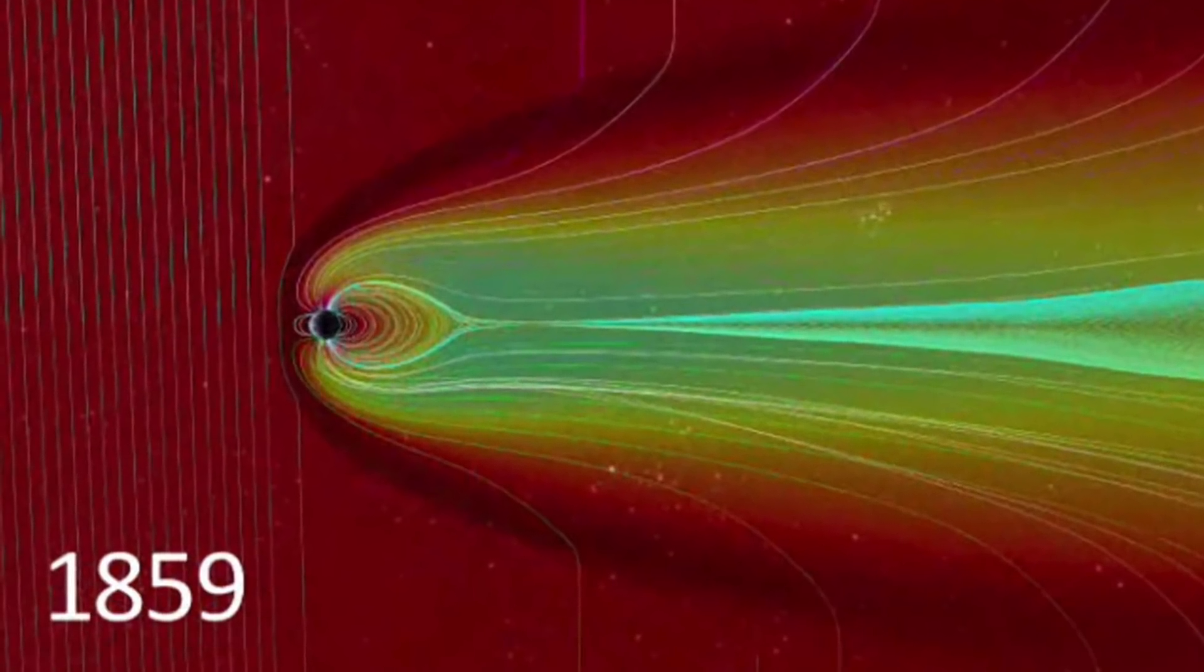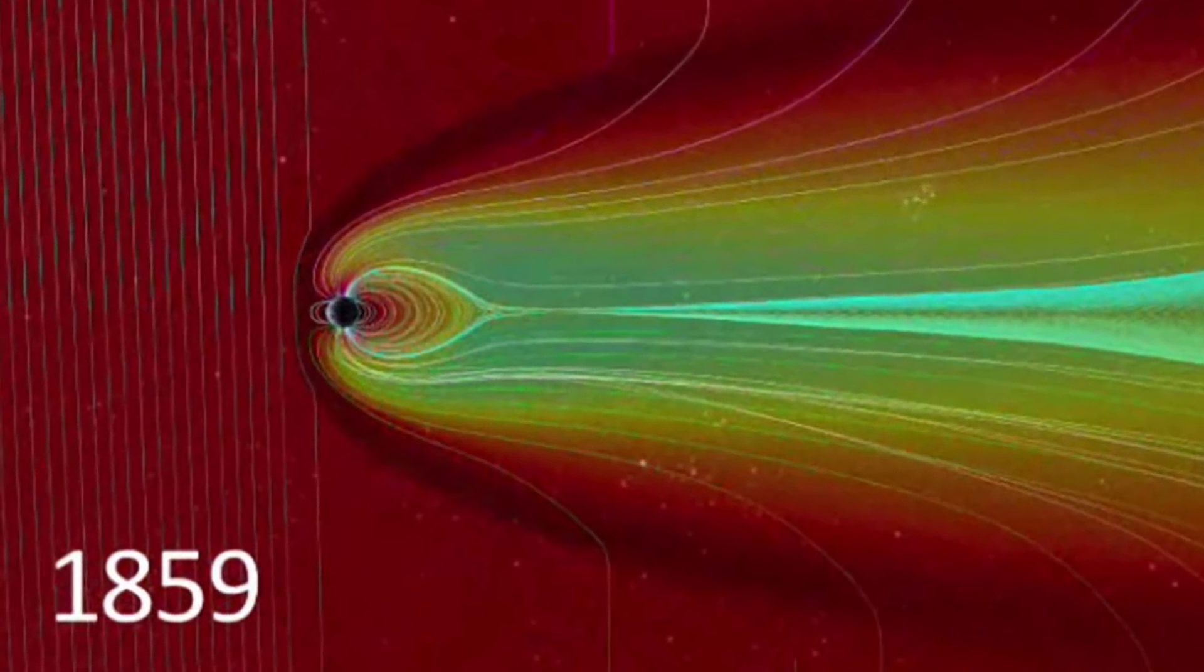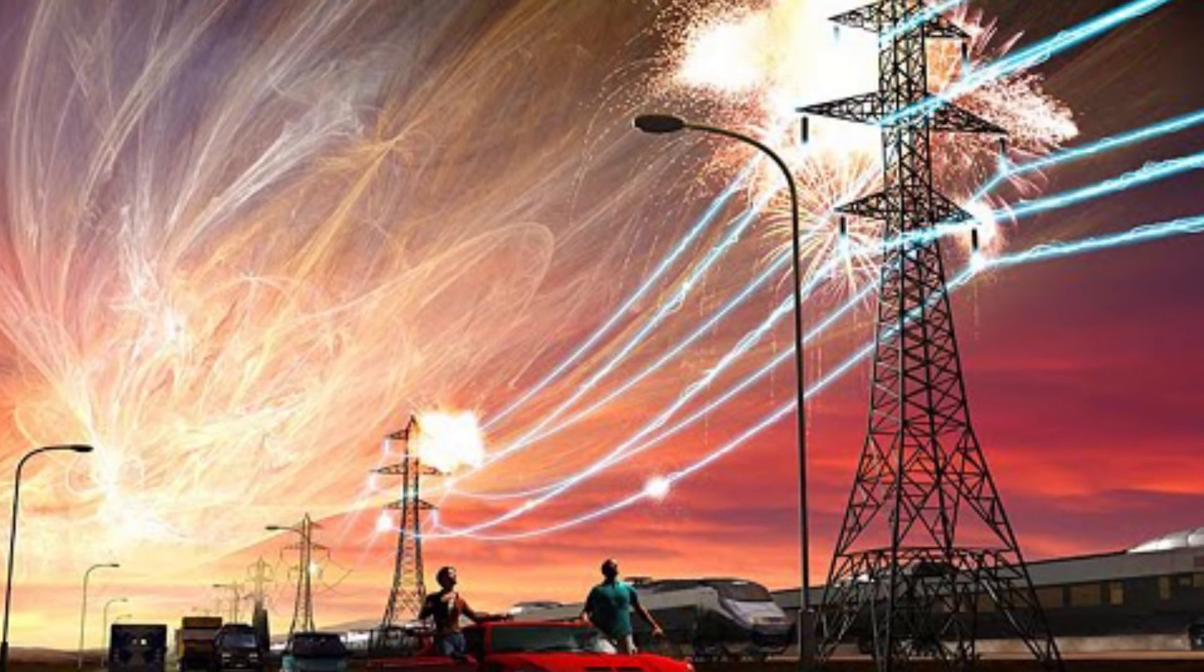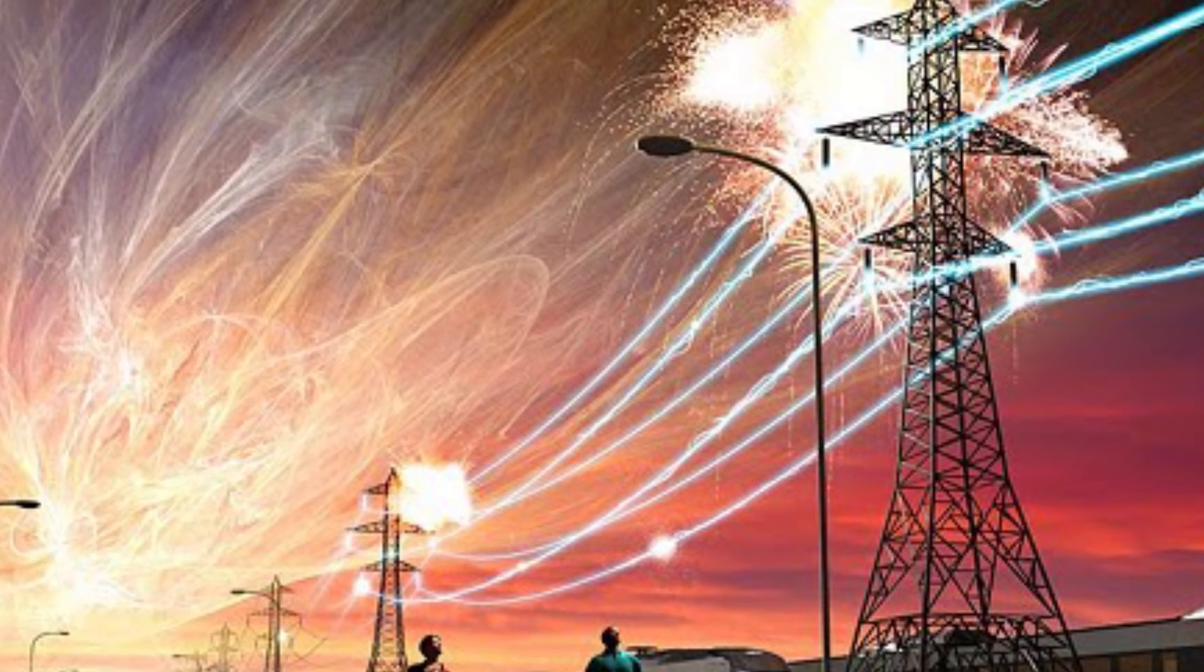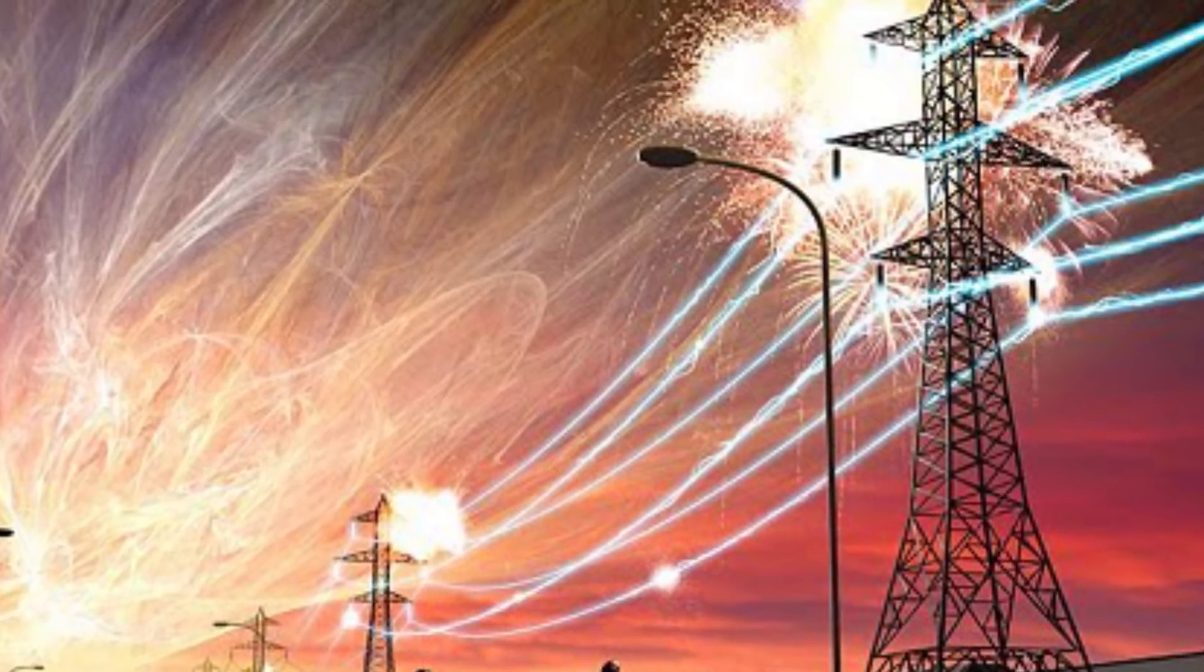There was a catastrophic solar storm that hit the earth in 1859, known as the Carrington event. This occurred just as humans had laid down telegraphic wires, and when the solar storm hit, the radiation caused the wires to burst into flames.